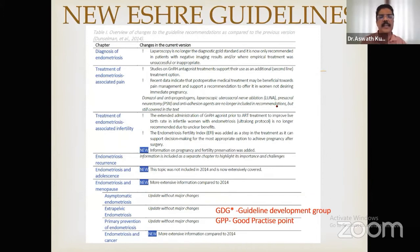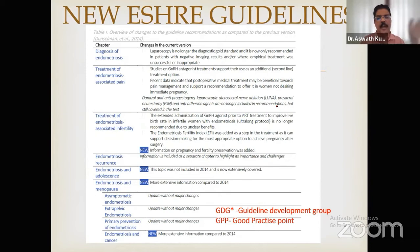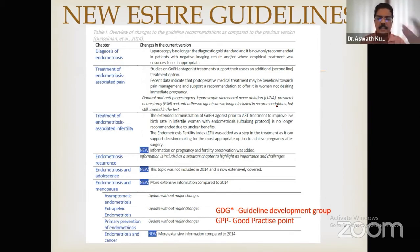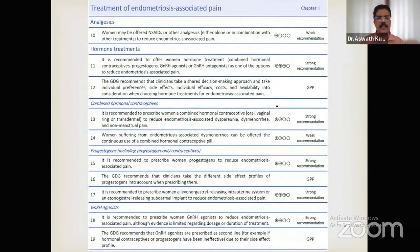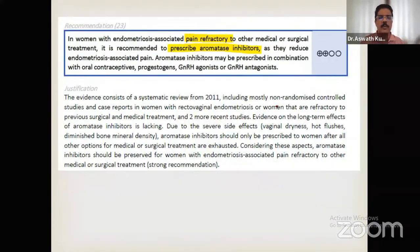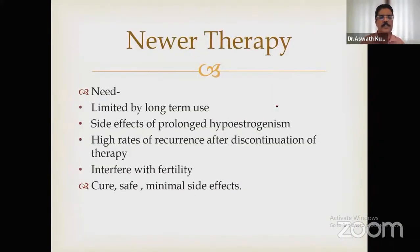New ESHRE guidelines: the most important change is that laparoscopy is no longer the diagnostic gold standard — ultrasound imaging is sufficient for diagnosis. Laparoscopy is now only a surgical method. GnRH antagonists have been included as a second-line therapy option. Danazol and anti-progestogens have been removed from recommendations.